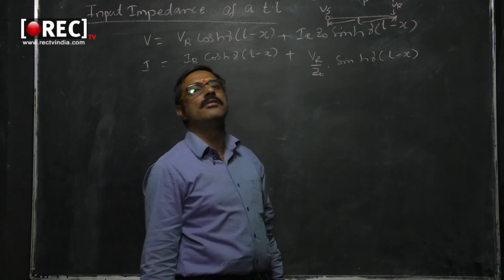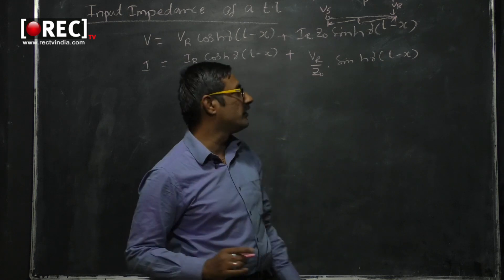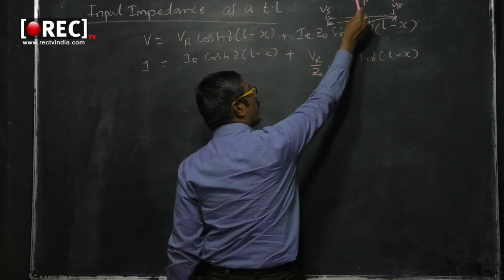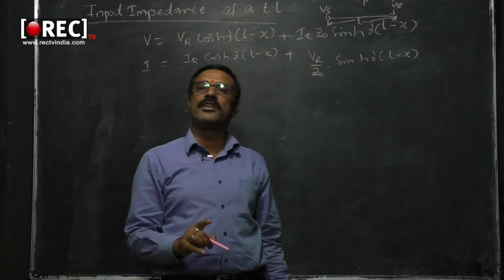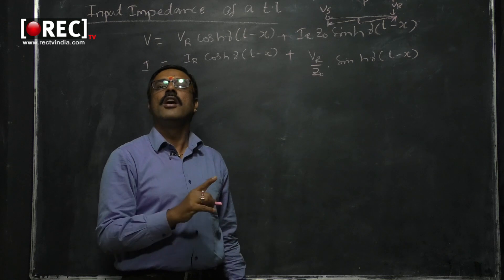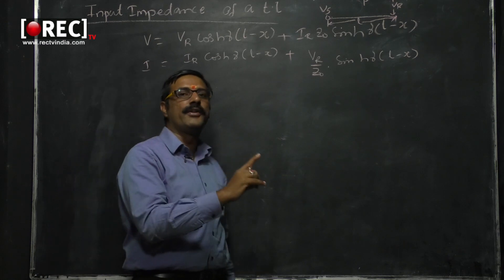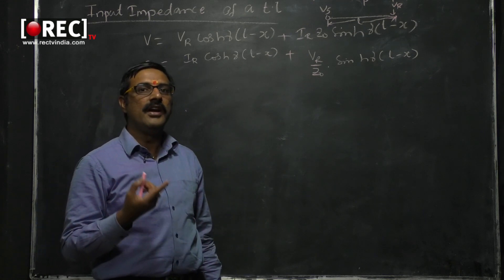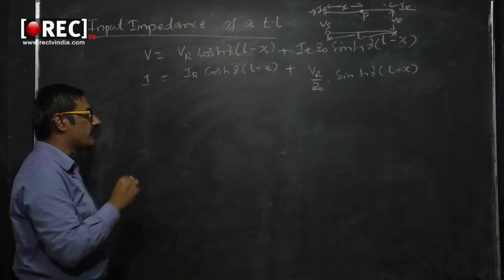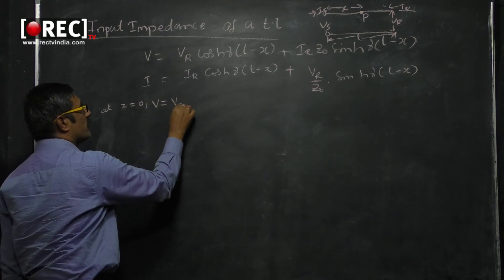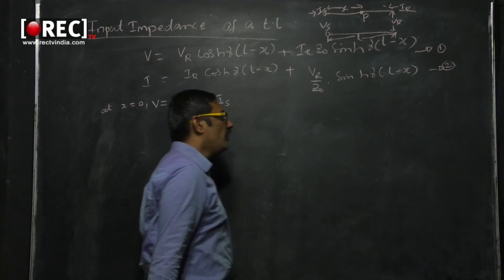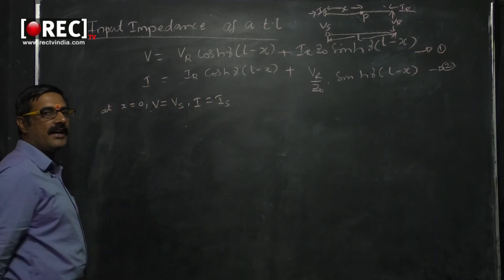To derive the source conditions: if x is the distance between point P and the source, and we are interested in the source only, then the arbitrary point P comes to the source. The distance between source terminals and source terminals is zero. So x equals zero for source parameters, v equals VS, and i equals IS. These are equation number 1 and equation number 2.